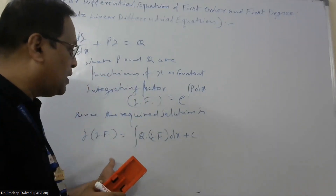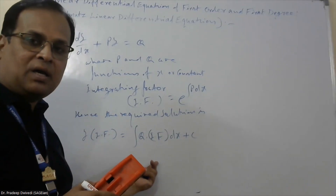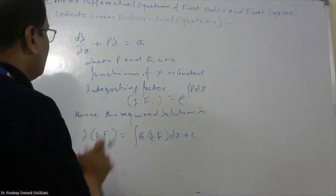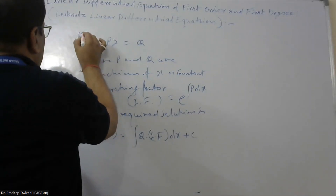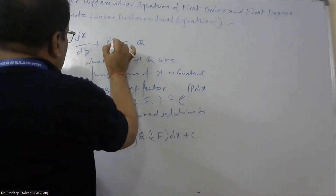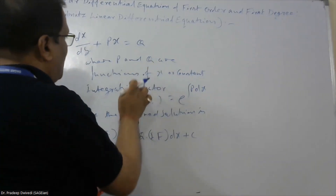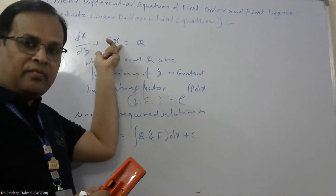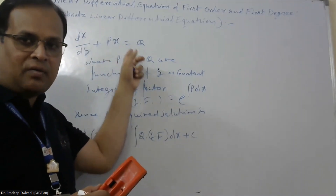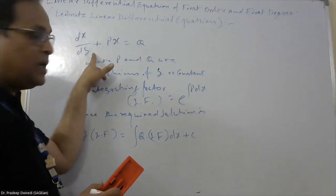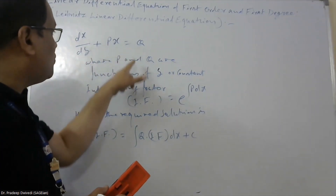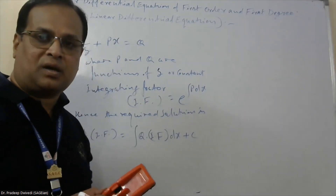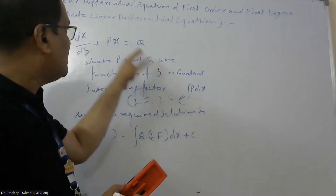If we take the differential equation dx/dy plus Px equal to Q, where P and Q are functions of y or constants, it is also called a linear differential equation of first order and first degree in x and y. Here x is the dependent variable and y is the independent variable, and P and Q are functions of y and constants.